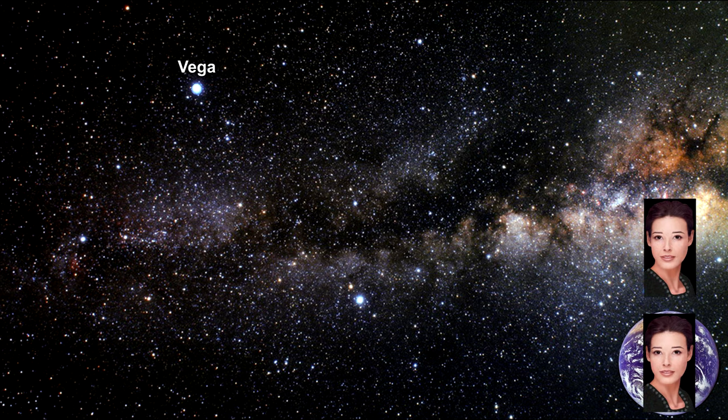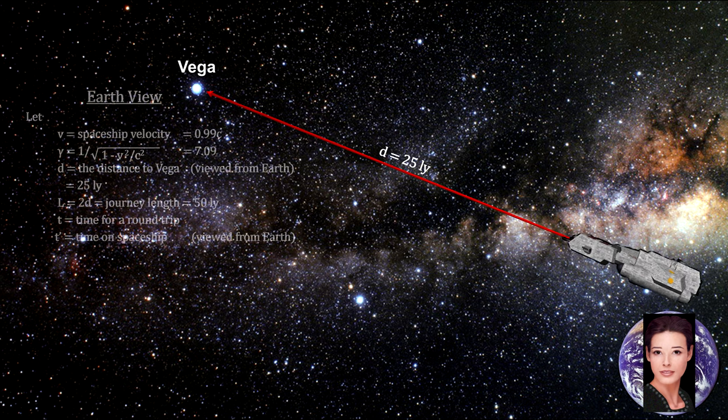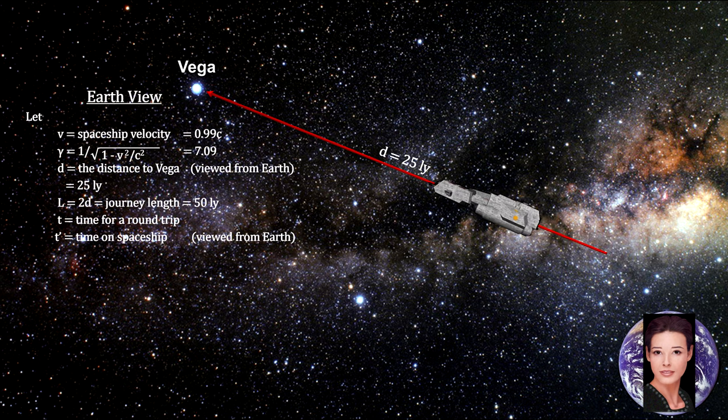Suppose two 20-year-old twins start out together on the Earth. One of them gets into a spaceship for a trip to Vega, traveling at 99% of the speed of light.